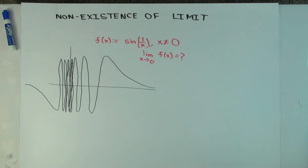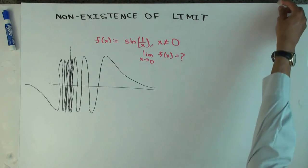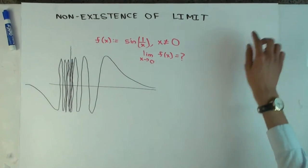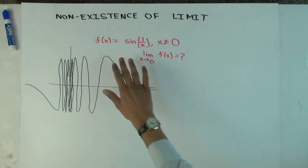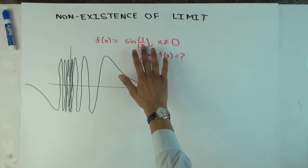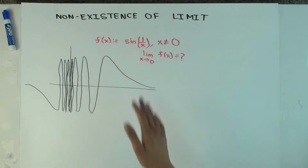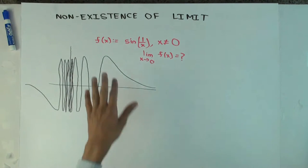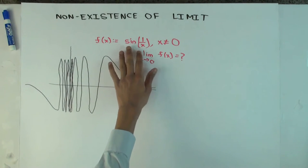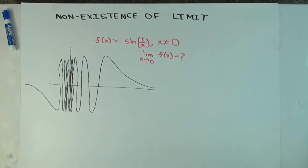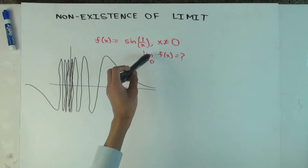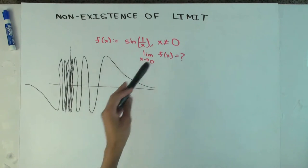This talk is going to be about why, under certain circumstances, limits don't exist. We're going to take this example of a function defined as sine of 1 over x. Obviously that definition doesn't work when x equals 0, so this is the function defined only for all non-zero values. The goal is to figure out what the limit as x approaches 0 of f(x) is.